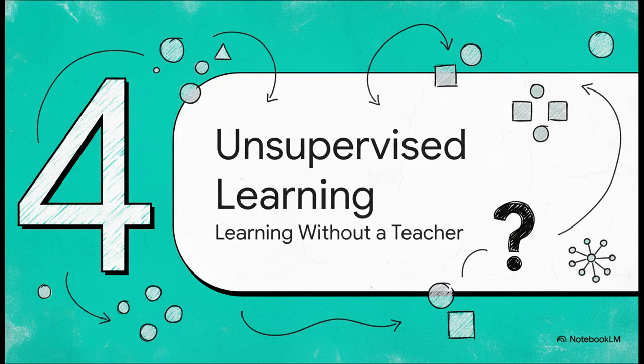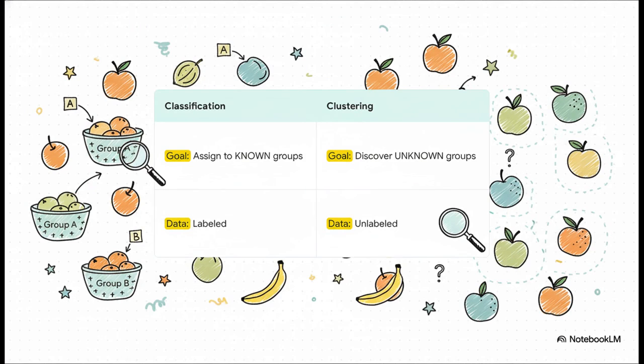Let's leave the world of teachers and flashcards behind. Time to jump into world number two: unsupervised learning. What happens when an algorithm gets no help, no labels, and has to figure out the data all on its own? It's really important not to get this mixed up with classification. Remember, classification is when you're sorting things into groups you already know, like cat or dog. Clustering is totally different. You give it a big, messy pile of data, and its job is to discover what groups are even in there in the first place.